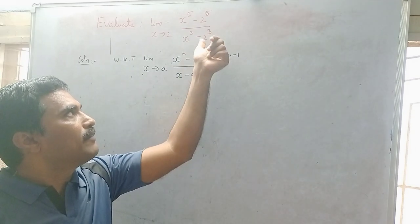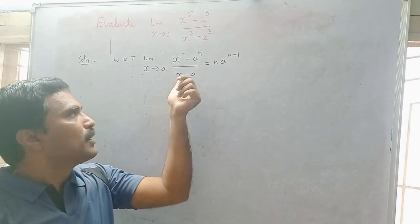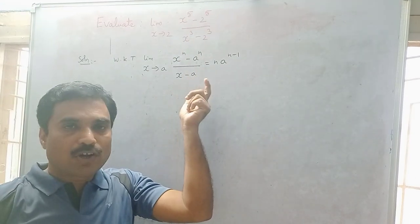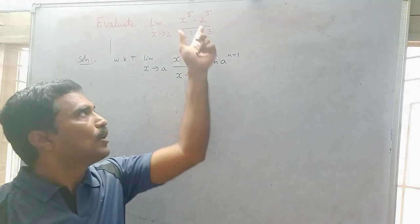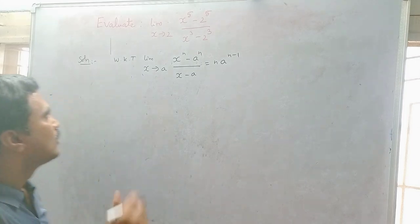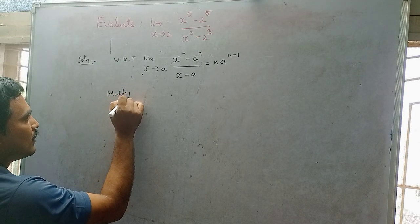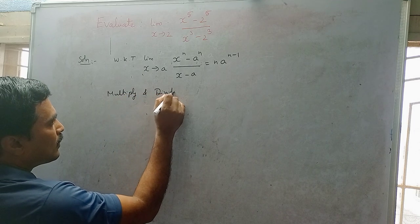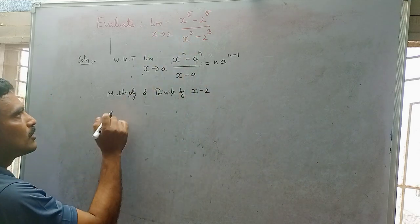To apply this formula, you have to multiply and divide by (x minus 2), because the value of a here is 2. So we are multiplying and dividing both the numerator and denominator by (x minus 2).